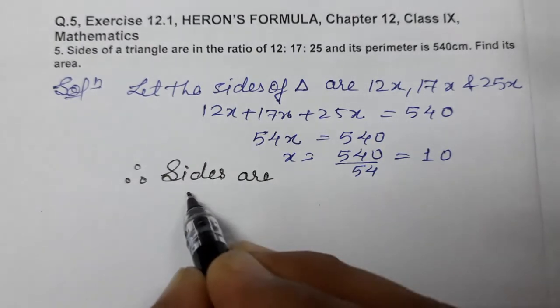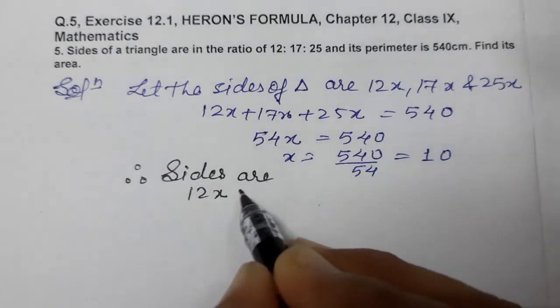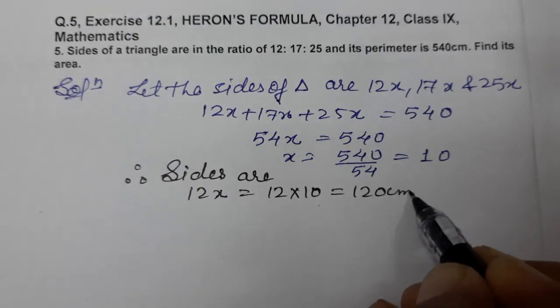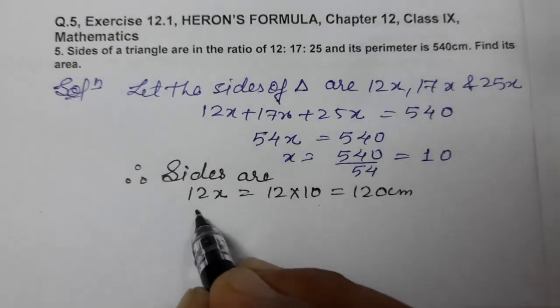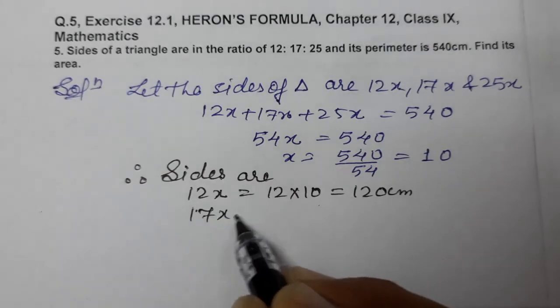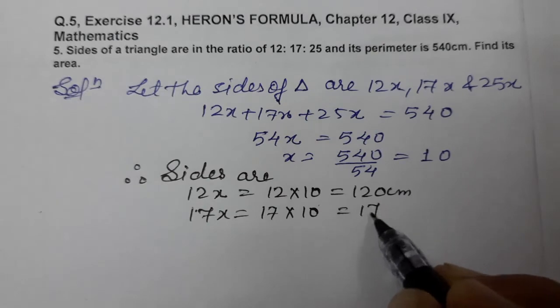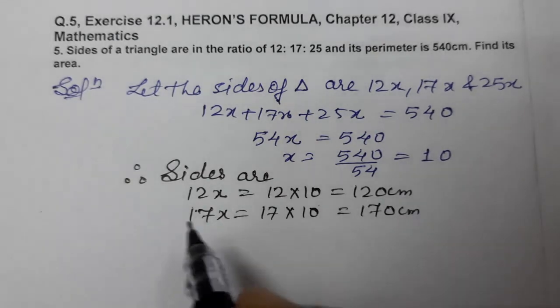Sides are: first 12x, 12 into 10, 120 centimeter. Then 17x, 17 into 10, 170 centimeter.